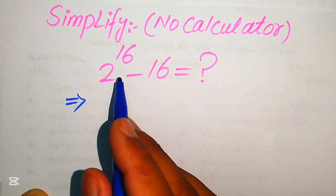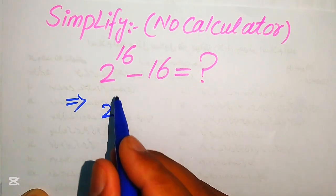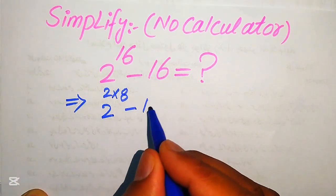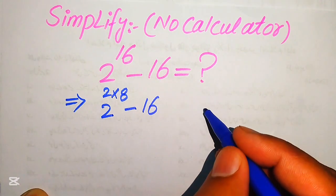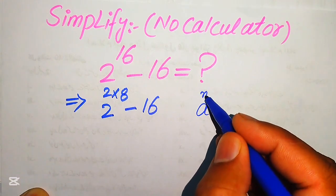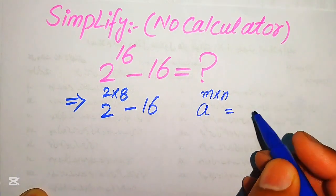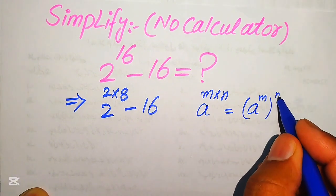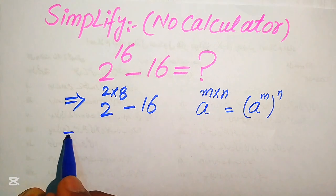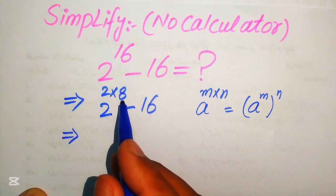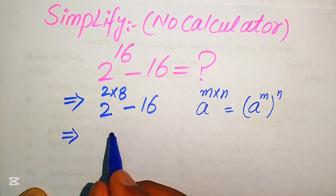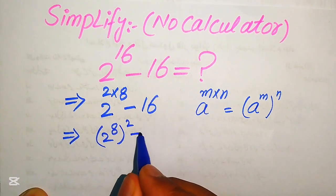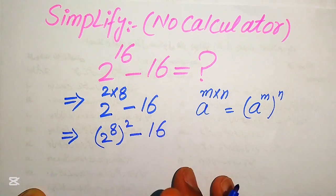The very first step is to rewrite these terms. We write 16 as 2 multiplied by 8, which gives 16, so we have 2^(2×8) minus 16. Now we apply the exponent law: a to the power of m multiplied by n equals a to the power of m, to the power of n. Using this law, we move the 8 inside, so it becomes 2 to the power of 8, whole squared, minus 16.